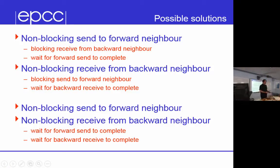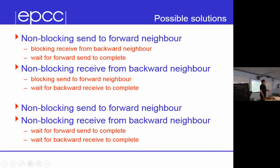A second option is a non-blocking receive from the backward neighbor — put it there when it comes in — then a blocking send to your forward neighbor, which will match because they've issued a non-blocking receive. Then wait for the incoming message to arrive and carry on. Or a third option: do both non-blocking — send the data out, set up the receive, and just wait for them both to complete, then carry on. These are worth programming up because they have slightly subtle differences.